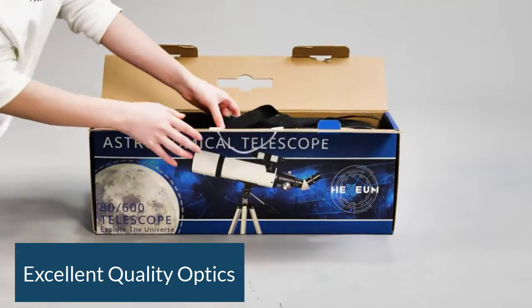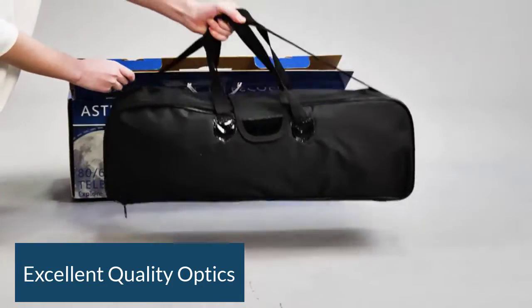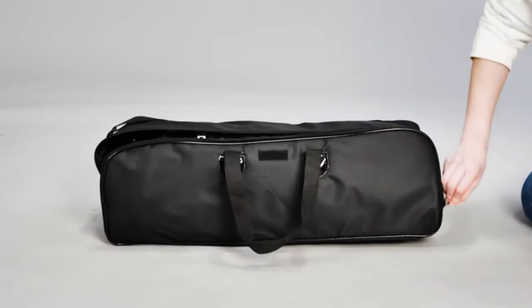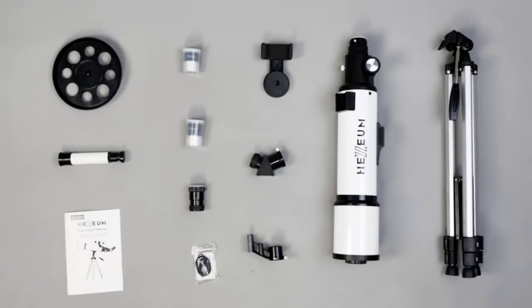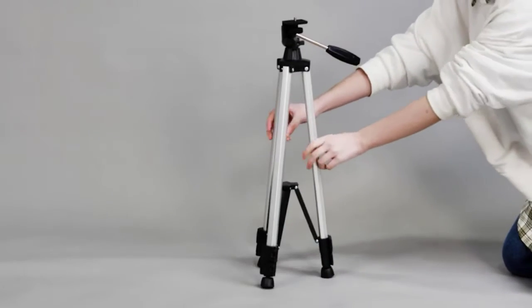This device has an aperture of 80 millimeters and a focal length of 600 millimeters. Two excellent quality replaceable eyepieces at 25 millimeters and 10 millimeters for 24 times and 60 times magnification are included with the telescope, which is suitable for children and adults.